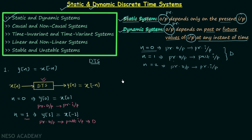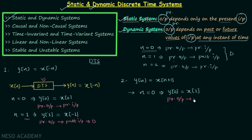In the second example we are having y[n] equal to x[n+1]. We will start with n equal to 0. This will give us y[0] equal to x[0+1], which means x[1]. The output here is the present output and it is depending on the future value of input, so the input we are having is a future input. It is a future input because the present instant is n equal to 0 and compared to 0, 1 is a future value. Therefore present output is depending on the future input, and this implies the system is dynamic. As soon as you get the system as dynamic there is no need to check for other values of n.